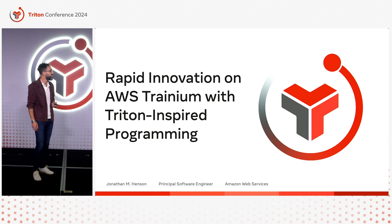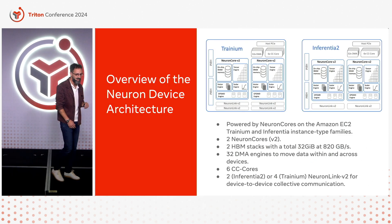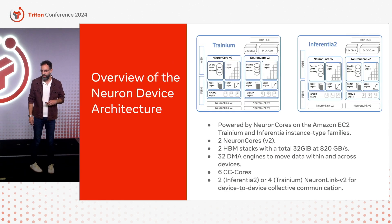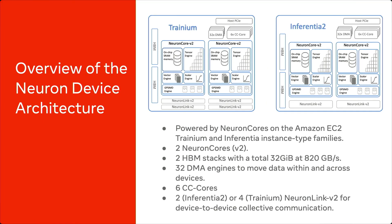So what about the Neuron device needs a special language to express things in? We have a blowout here of the Trainium instance with a single Neuron device on it. As you can see, it has two cores with two HBM stacks, one for each core, a total of 32 gigabytes at 820 gigabytes per second. We have 32 DMA engines that move data across the cores, six collective compute cores, and NeuronLink V2 for device-to-device collective communication.